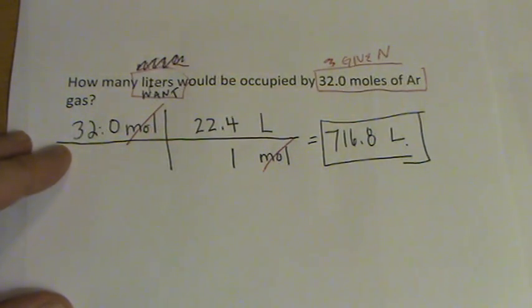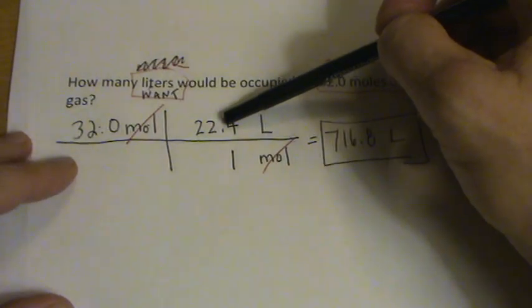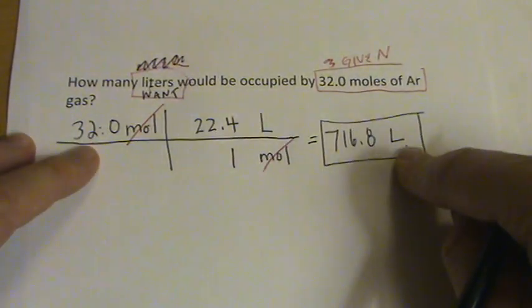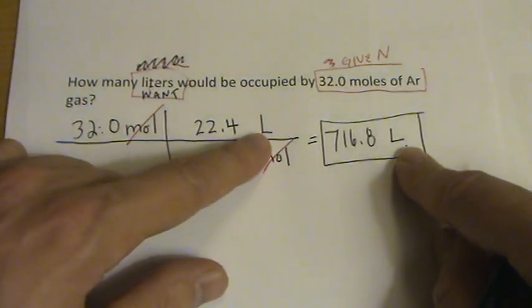So here we ended up multiplying. The moles canceled out. We ended with the 22.4 liters on the top, and we did end up with liters as our unit that were left over.